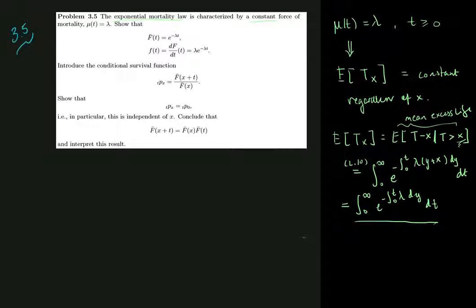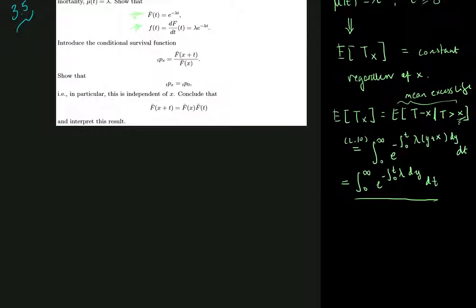Let's get back on track. We are asked to show that the distribution function is given by this expression, and that the density is given by this expression. That shouldn't be too hard, given that we know the distribution function F̄(t) in terms of the mortality rate.